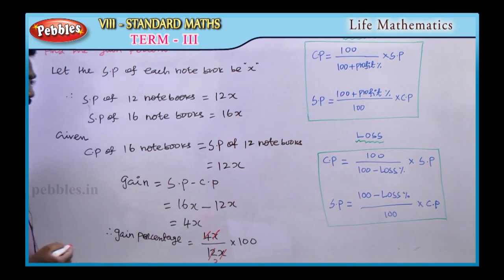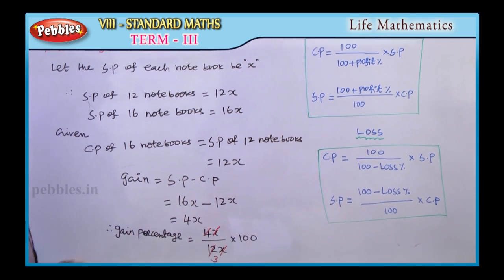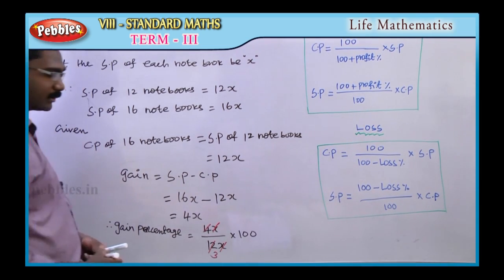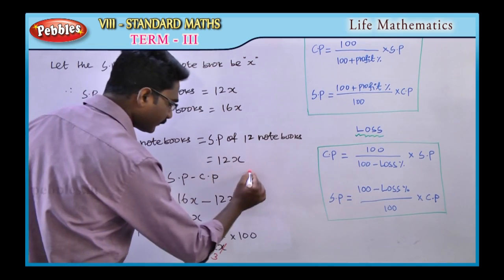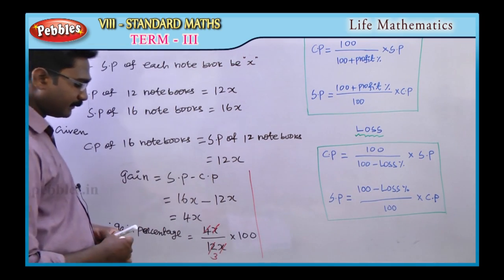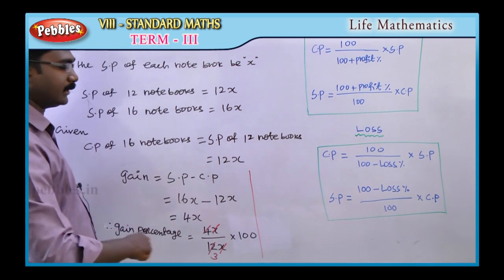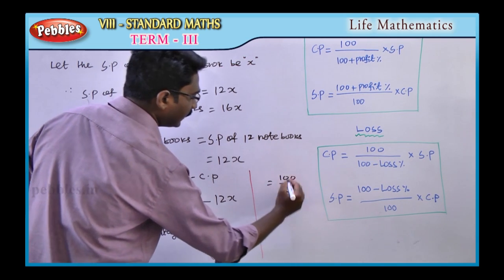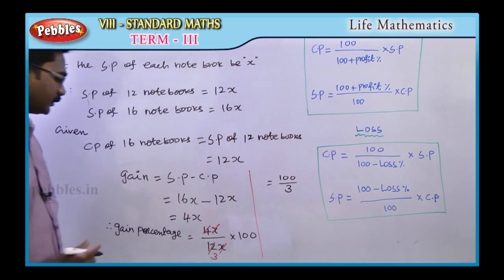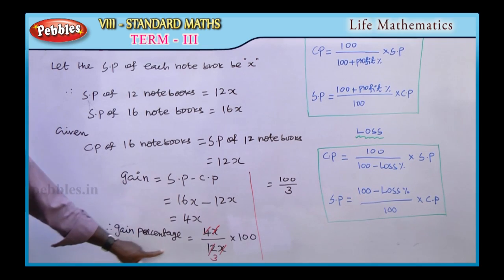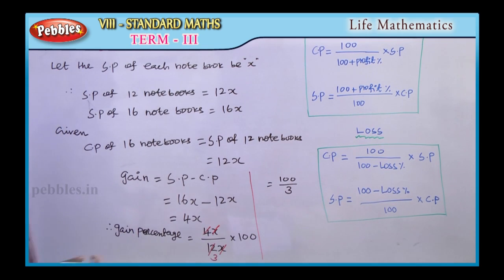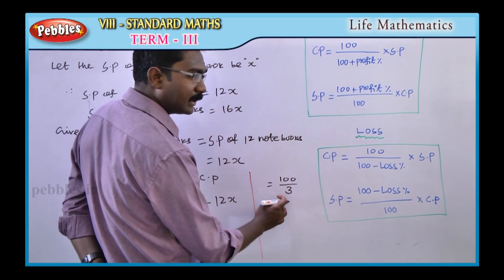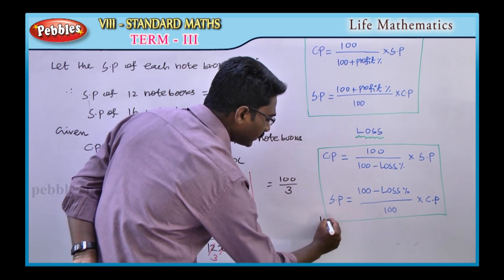4 divided by 12 simplifies — 3 times into 12 gives 3 in the denominator, and 3 is now in the numerator. Therefore the gain percentage is 100 divided by 3.